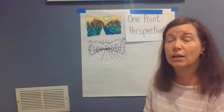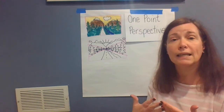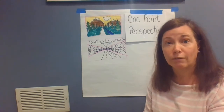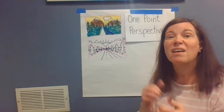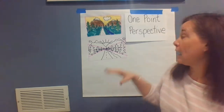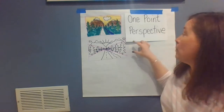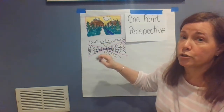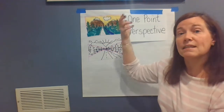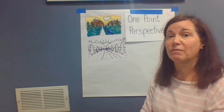We know from drawing landscapes before that when we see a landscape, the things that are close to us — we call that area the foreground. Things in the foreground look bigger, and they are lower on the page. As things get further away, we call that area the middle ground, and then things that are furthest in the back we call the background. They are higher and towards the top of the paper.